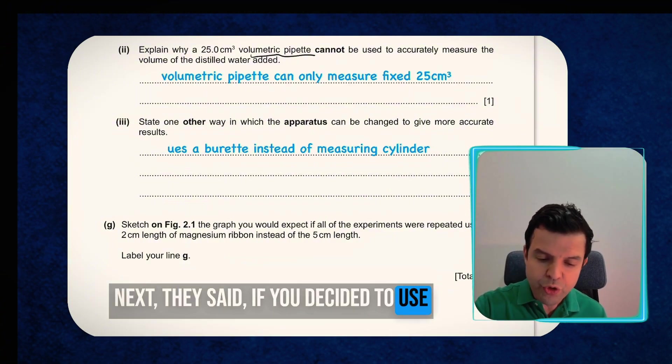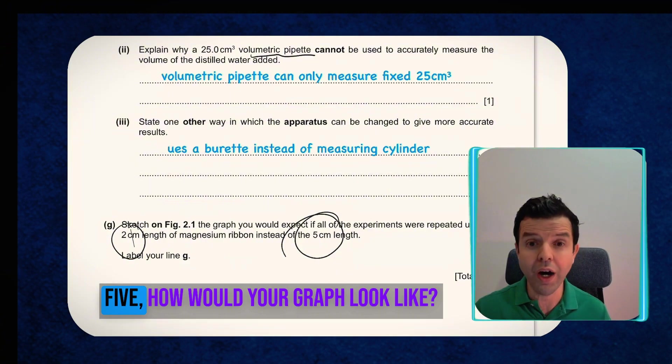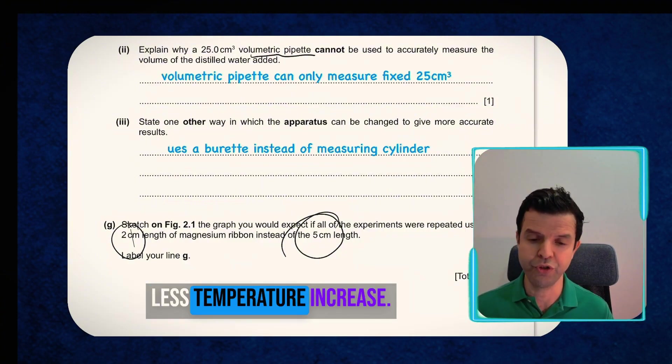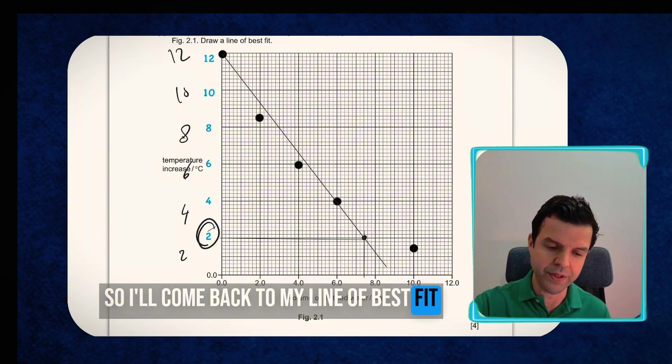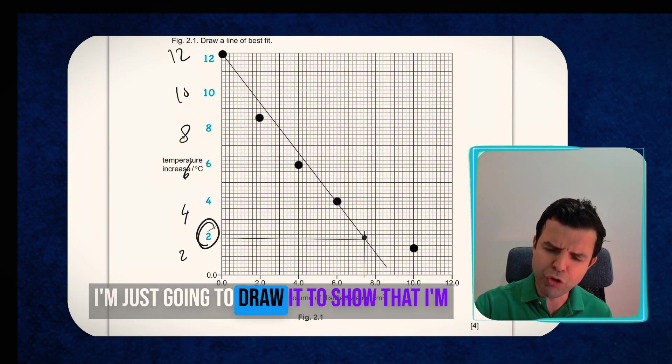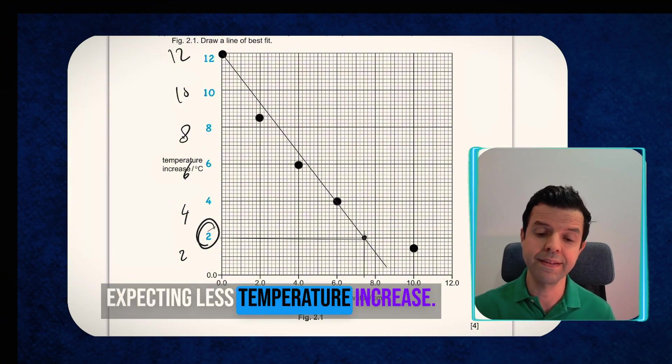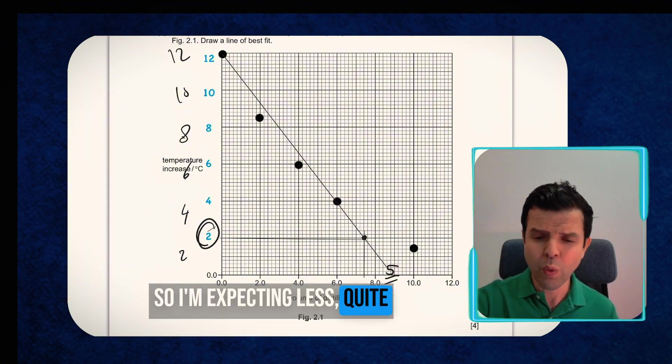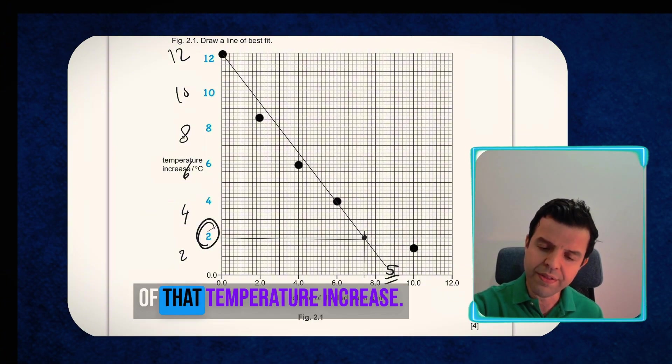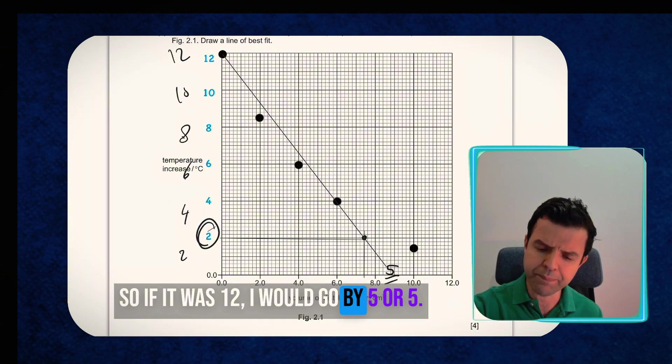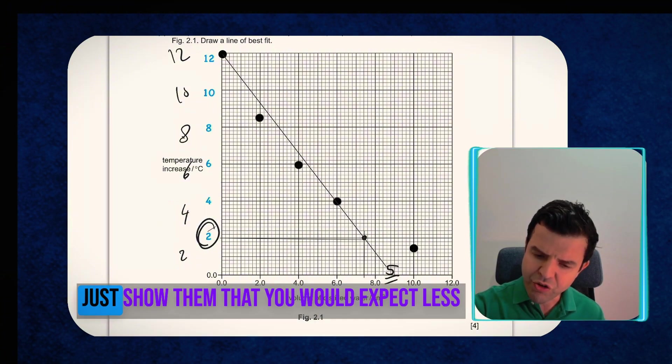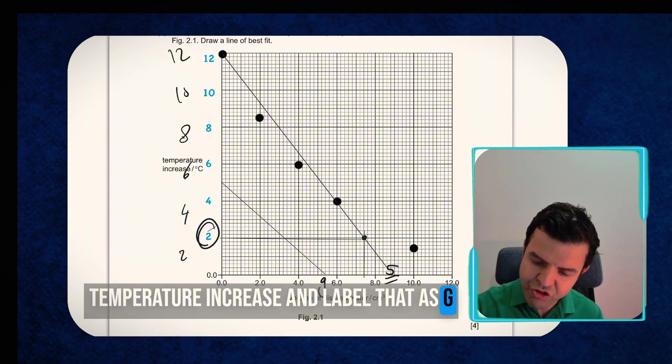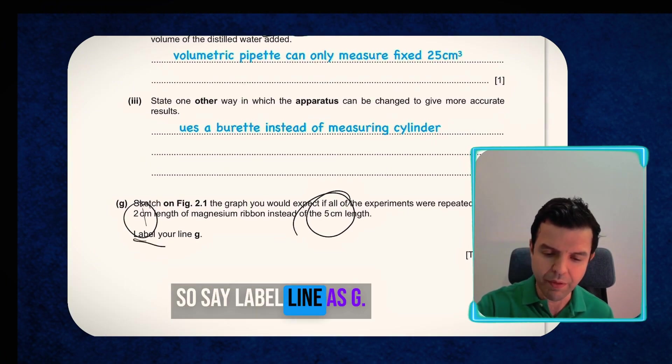Next, they said if you decided to use 2 cm magnesium ribbon instead of 5, how would your graph look like? So I'm reducing the mass of the magnesium. So I'm expecting less temperature increase. So I'll come back to my line of best fit and I'm going to draw another line here. I'm just going to draw it to show that I'm expecting less temperature increase. The initial was 5, so that's 5 here, 5 cm of magnesium. So I'm expecting less, quite half or less than half of that temperature increase. So if it was 12, I would go by 5 or 5.5. It doesn't matter. Just show them that you would expect less temperature increase and label that as G because that's what they asked me to label it.